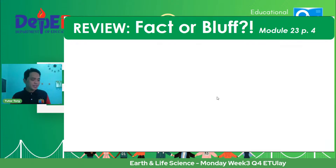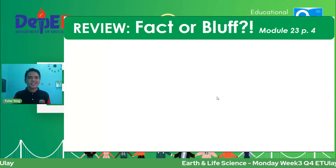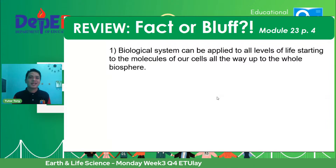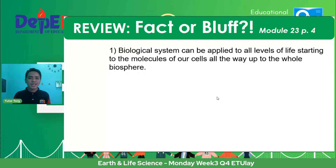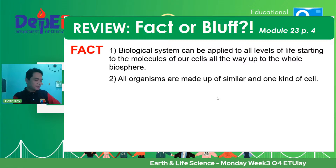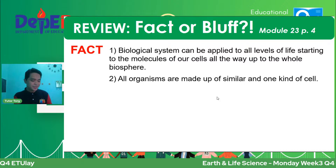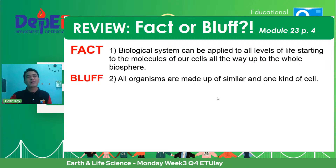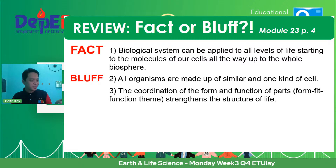We will now proceed to week number 3. As a review, let's check the comment section. Fact or bluff: biological systems can be applied to all levels of life, starting from the molecules of our cells all the way up to the whole biosphere. That is a fact. Statement two: all organisms are made up of similar and one kind of cells — that is a bluff, because there is a variety of cell types. Good job, JJ, for answering.